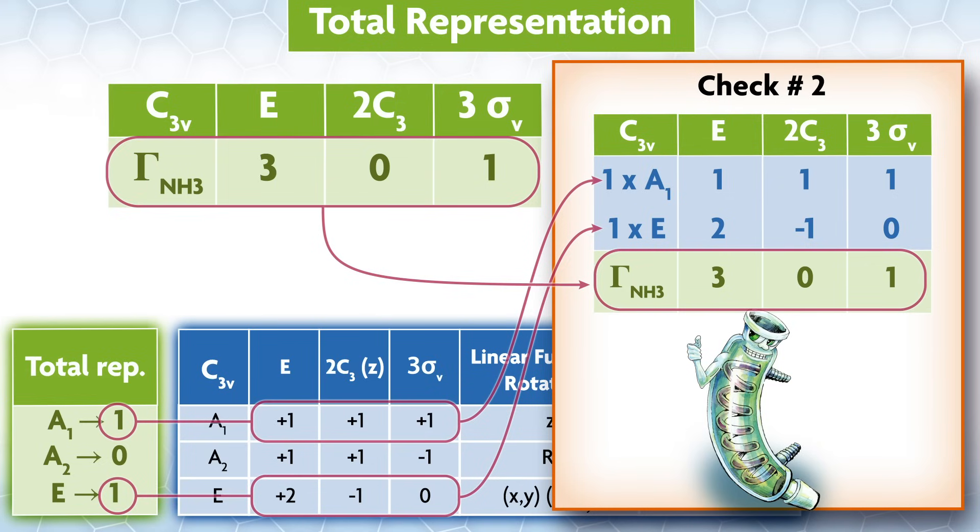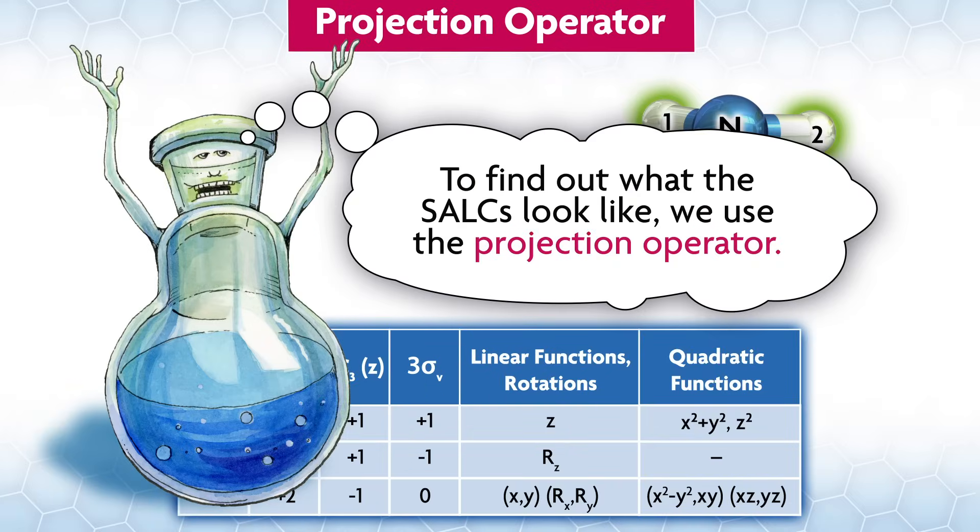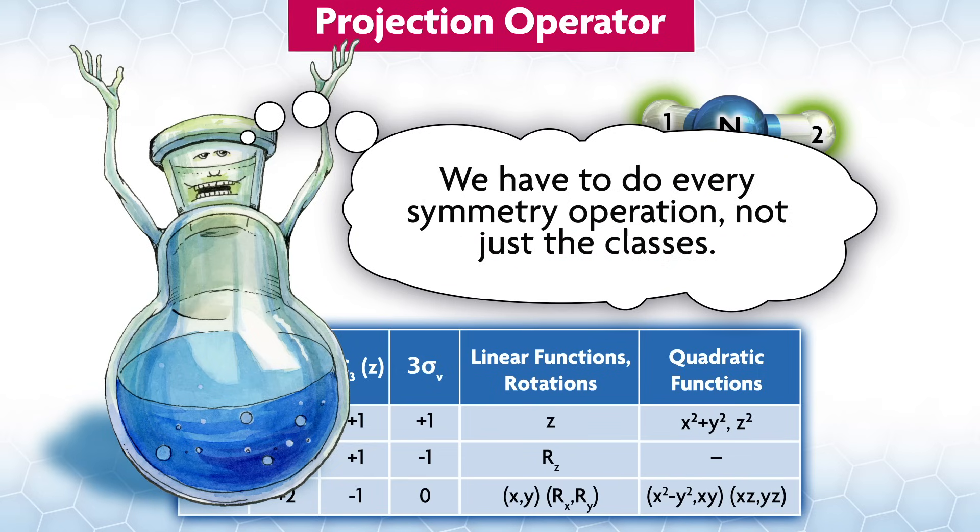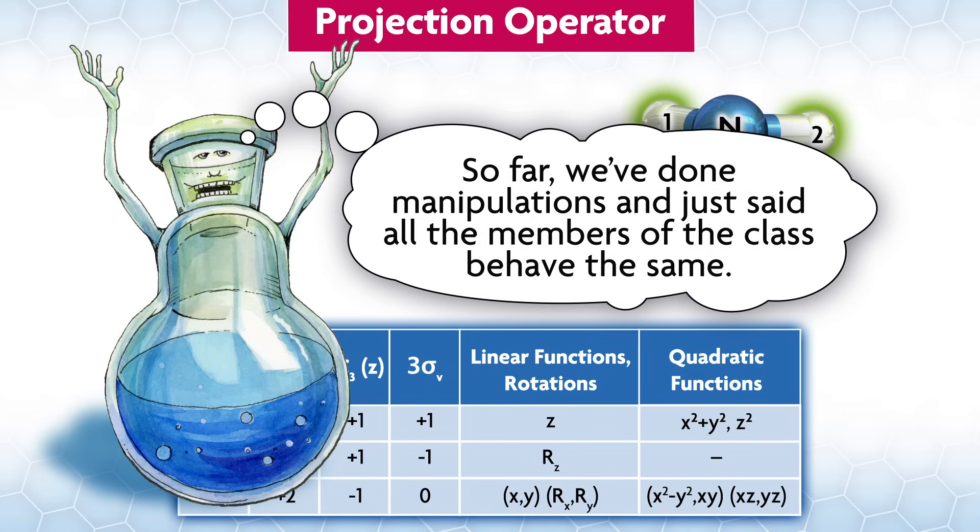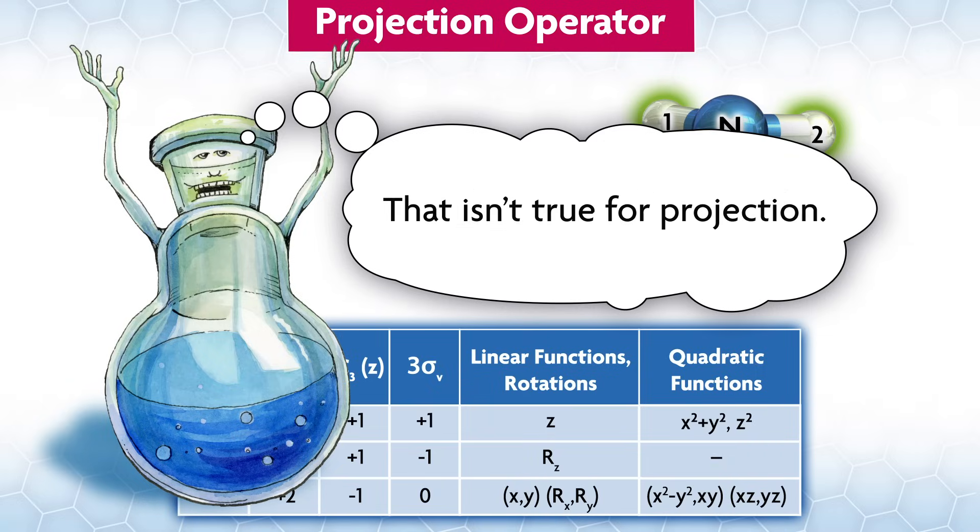In the end, we would like to see the orbitals and know what they look like. To find out what the SALCs look like, we use the projection operator. The thing that makes projection different from most calculations in group theory, and sometimes gives people trouble, is that we have to do every symmetry operation, not just the classes. So far, we've done manipulations and just said all the members of the class behave the same. That isn't true for projection.